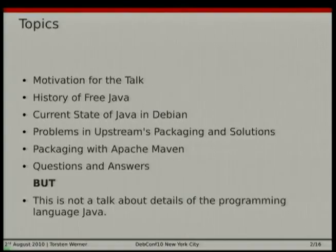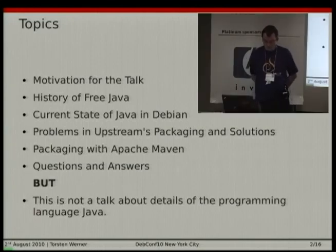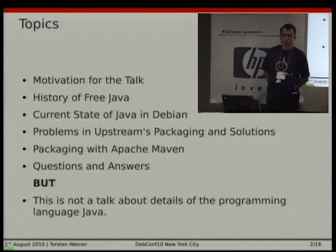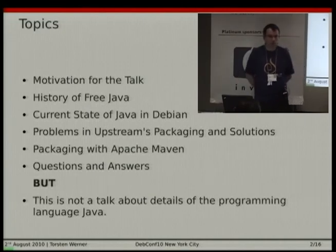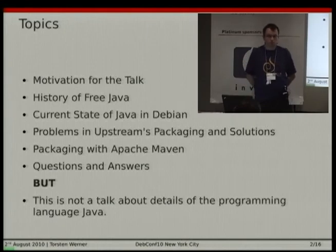I want to talk a little bit about the Java packaging nightmare and what is so special about packaging Java or software in Java. My topics will be first a bit about the motivation of the talk, about the history of Java, the current state of Java in Debian. Then the biggest part will be the problems in upstream packaging and some proposed solutions. And a short slide about packaging with Apache Maven in addition to the Java helper. I won't talk about the programming language Java itself — there's nothing wrong in the language. It's more or less the open source community of the Java world, which is a bit different than what we know from other languages.